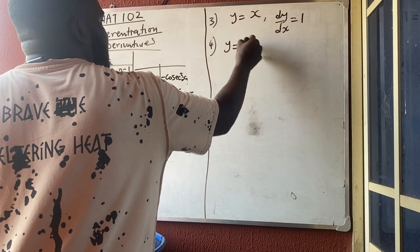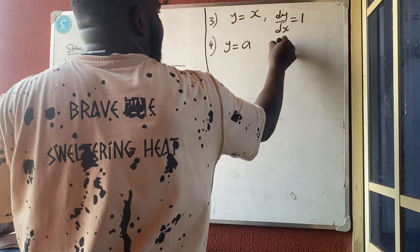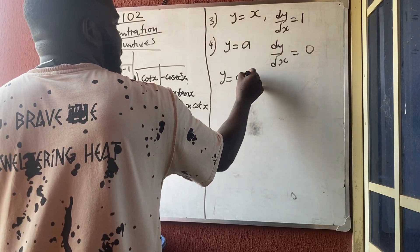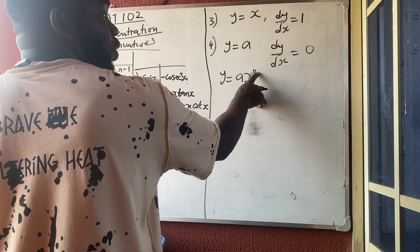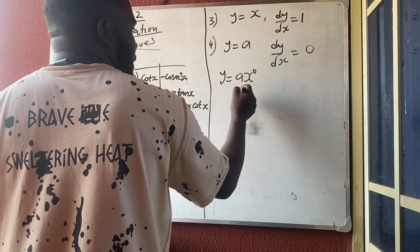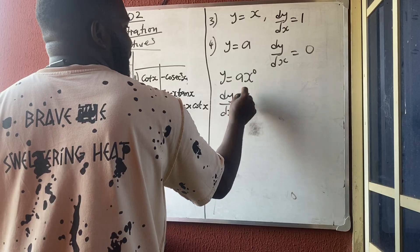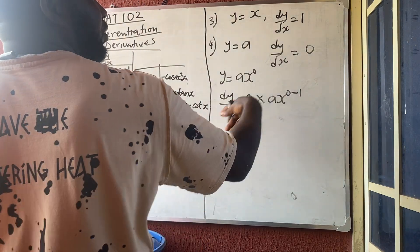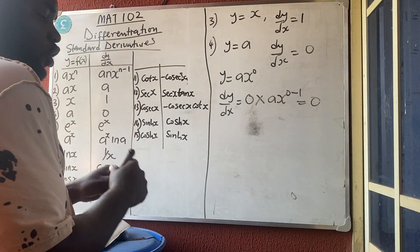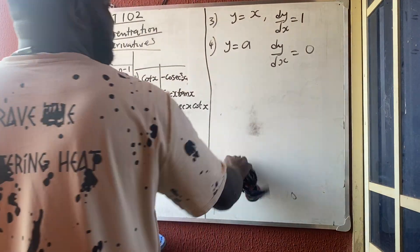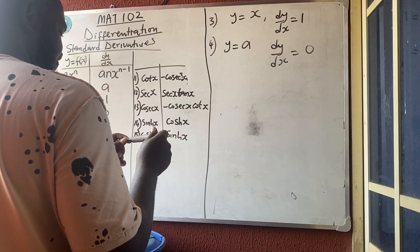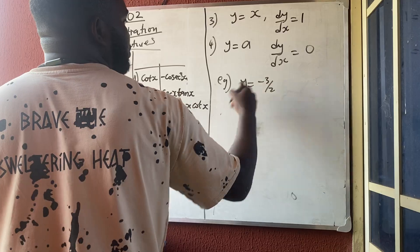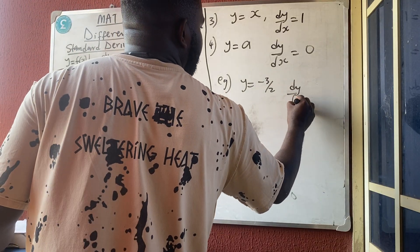Rule 4: if y is a constant — no variable — then dy/dx = 0. We can verify: a = ax^0 since x^0 = 1. Differentiating: multiply by the power 0, and 0 times anything is 0. So if y = −3/2, then dy/dx = 0.